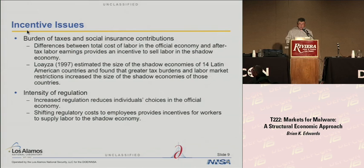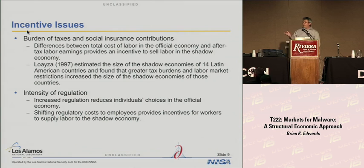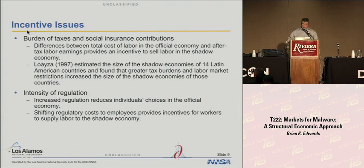Some of the incentive areas include the burden of taxes and social insurance contributions, the intensity of regulation, social transfers, labor market regulation, and public sector services. If workers and employers are required to pay taxes and make contributions to social insurance and consider this too costly, people are going to be paid under the table, and that activity automatically goes from official to unofficial. Increased regulation reduces individuals' choices in the official economy, so they will try to get goods and services outside officially, and suppliers will find ways to supply these — albeit illegally. Shifting regulatory costs to employees provides incentives for workers to supply labor to the shadow economy.